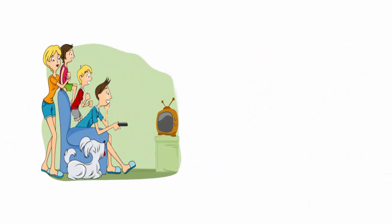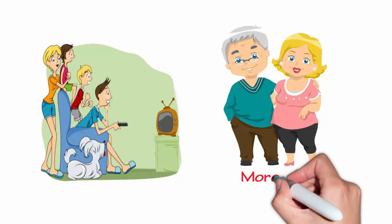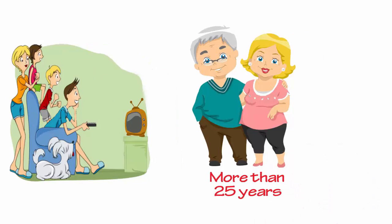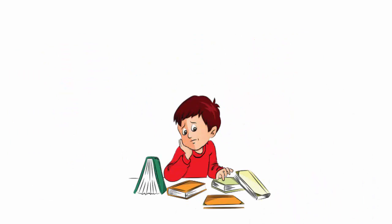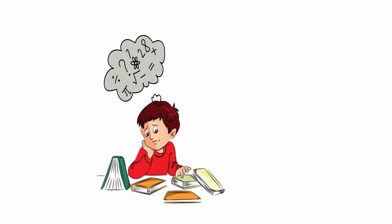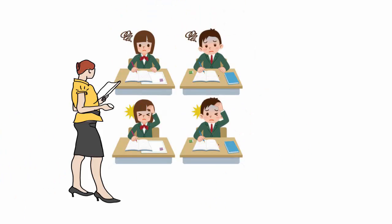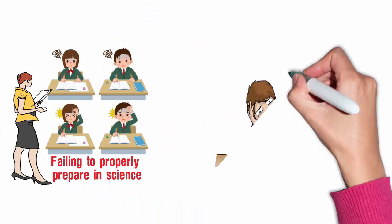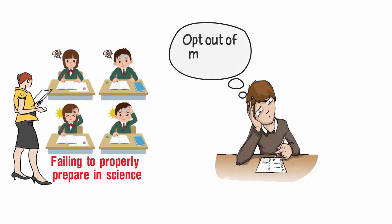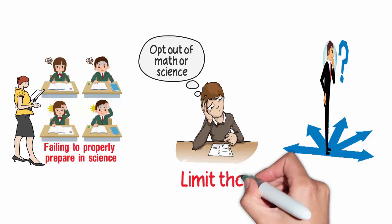Is your child struggling with science? Do you worry about their future if they don't establish a strong base in science? Are your schools failing to properly prepare your children in science? Research shows that students who opt out of math or science as early as middle school drastically limit their career choices.